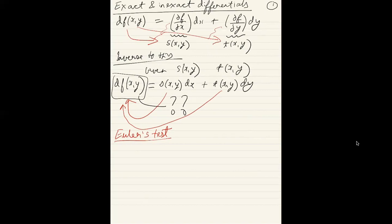What Euler said, and we are not going to prove this because it's a bit complicated, is that given two such functions, if the partial of s with respect to y is the same as the partial of t with respect to x, then this is going to be true. Then yes indeed this is an exact derivative.